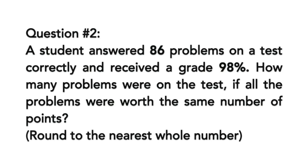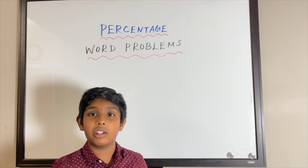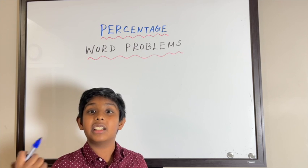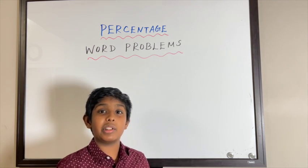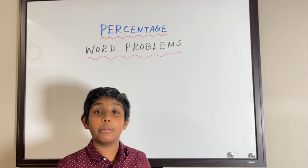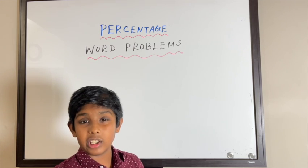Our second question is: A student answered 86 problems on a test correctly and received a grade of 98 percent. How many problems were on the test? Now it's the other way around. They didn't give us how many questions there were in total, they just gave us how much he did correctly. So we're supposed to find out how many questions there were in total.